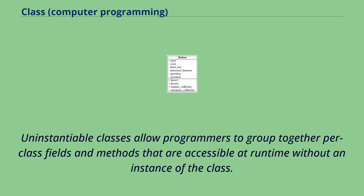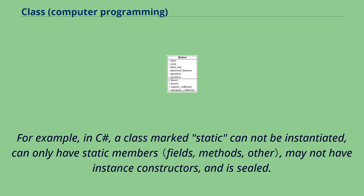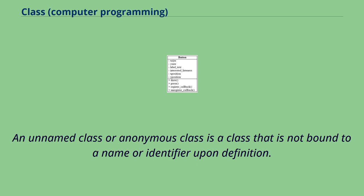Uninstantiable classes allow programmers to group together per-class fields and methods that are accessible at runtime without an instance of the class — indeed, instantiation is prohibited for this kind of class. For example, in C#, a class marked 'static' cannot be instantiated, can only have static members, may not have instance constructors, and is sealed. An unnamed or anonymous class is a class that is not bound to a name or identifier upon definition, analogous to named versus unnamed functions.